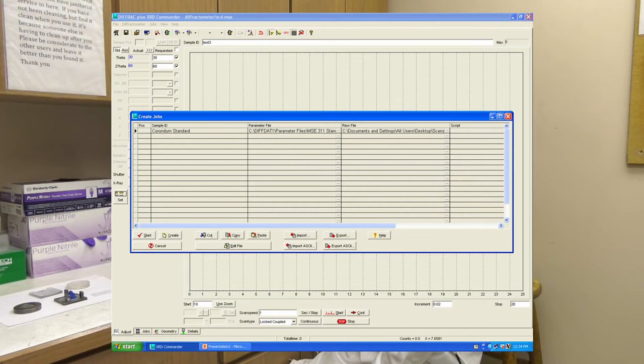This will open a new window where the user can add a sample ID, select a parameter file, and save location for their sample. The user starts the selected scan by pressing the Start button.